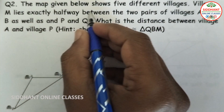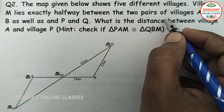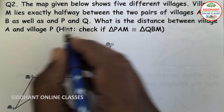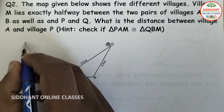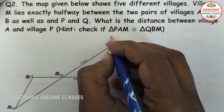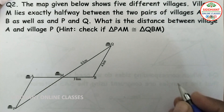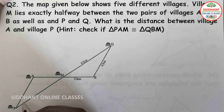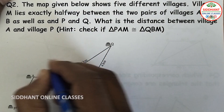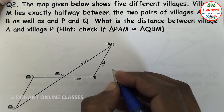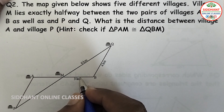Question number 2: The map shows five different villages. Village M lies exactly halfway between pairs A and B, as well as P and Q. The question asks for the distance between village A and village B. The hint is to check if triangle PAM is congruent to triangle QBM using the SAS rule.